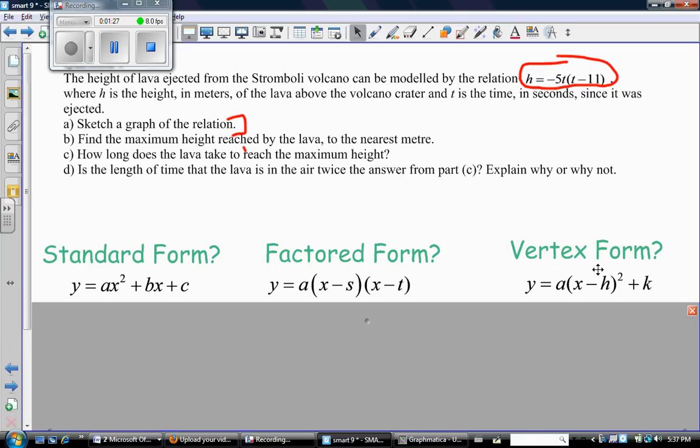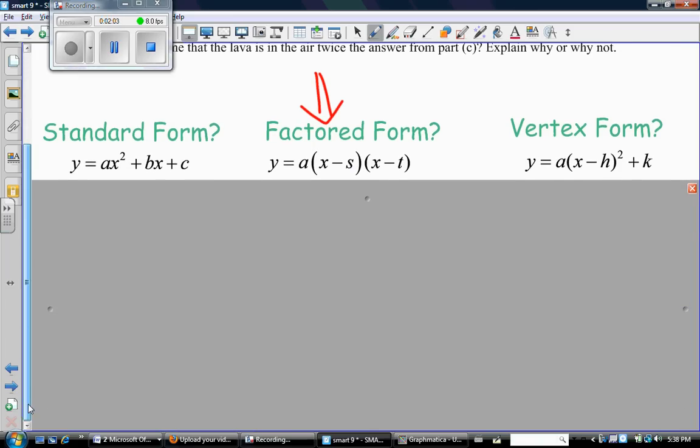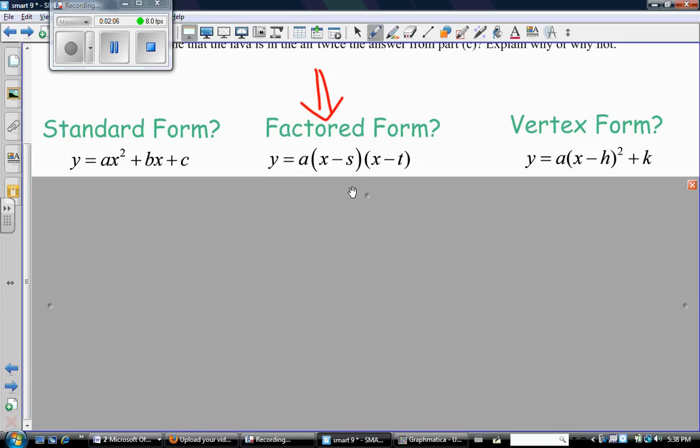It's important that you know which form you were given so you know what to do to answer your question. When I look at this equation, it's pretty clear that this is a factored equation. Another way of telling is you don't see anything that has squared on it, but t times t would give me t squared, so it's definitely quadratic. But the form itself doesn't say t squared, and that must mean it's factored.